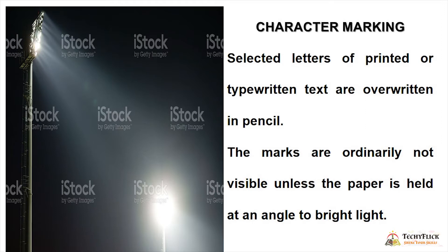First, character marking. Selected letters of printed or typewritten text are overwritten in pencil. The marks are ordinarily not visible unless the paper is held at an angle to bright light. So we look for specific letters that are pencil-overwritten; under normal viewing the marks are invisible, but under bright light the markings become visible.